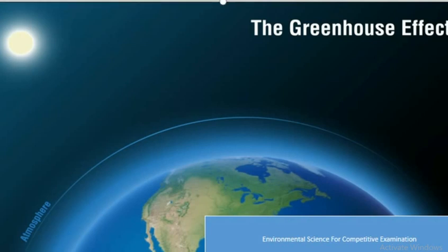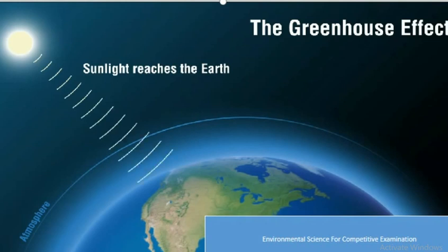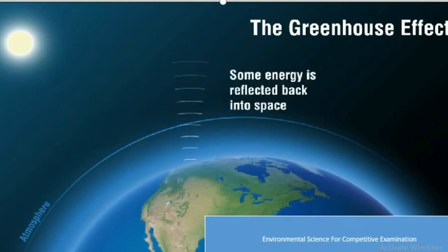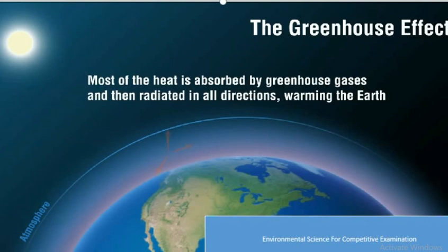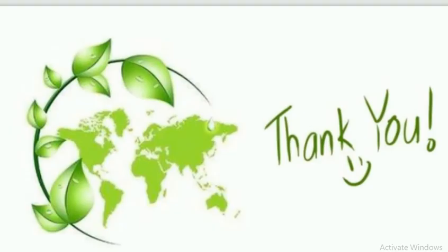Summary of the lecture: sunlight reaches the earth; some energy is reflected back into space; while some energy is absorbed and re-radiated as heat. Most of the heat is absorbed by the greenhouse gases and then radiated in all directions, warming the earth. If you have any questions, write in the comment section. Thank you. Allah Hafiz.